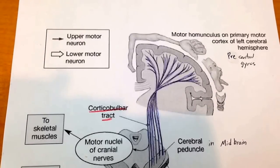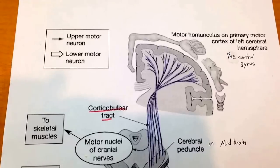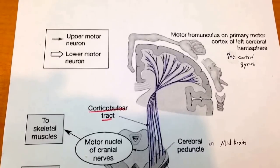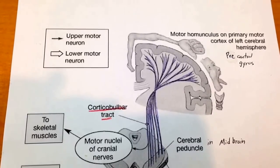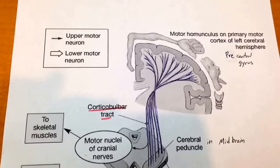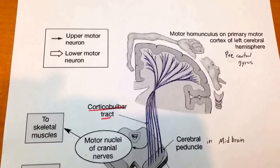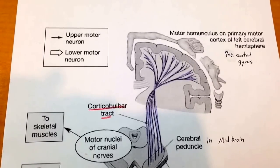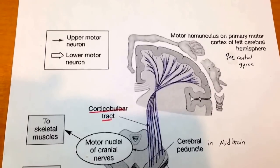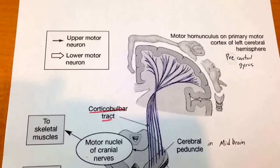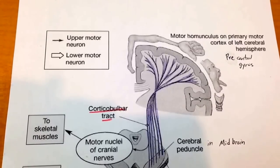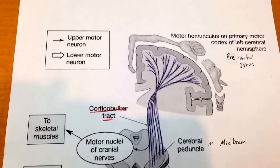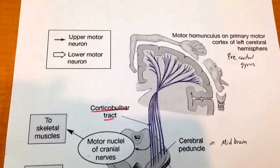Today we're going to talk about the three spinal pathways that are going to be on the Unit 2 test at the Paul L. Foster School of Medicine for 2013. Those three pathways are the corticospinal pathway, the dorsal column medial lemniscal system, and the anterolateral system.